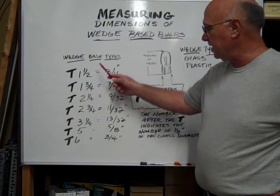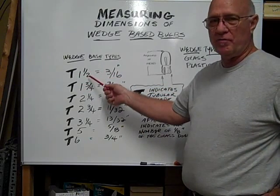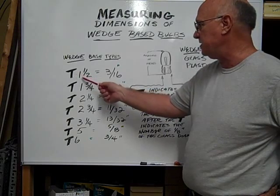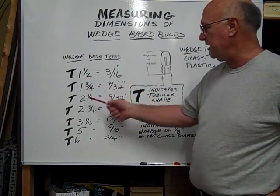So if this is actually a T two, it would be a quarter of an inch, it would be two eighths. But this is a T one and a half which is equal to three sixteenths.